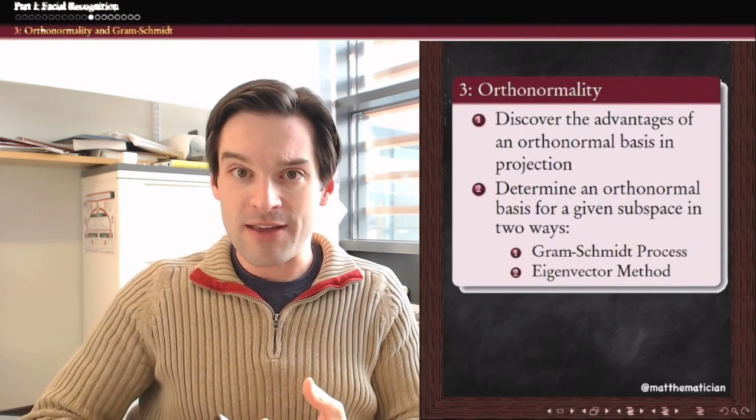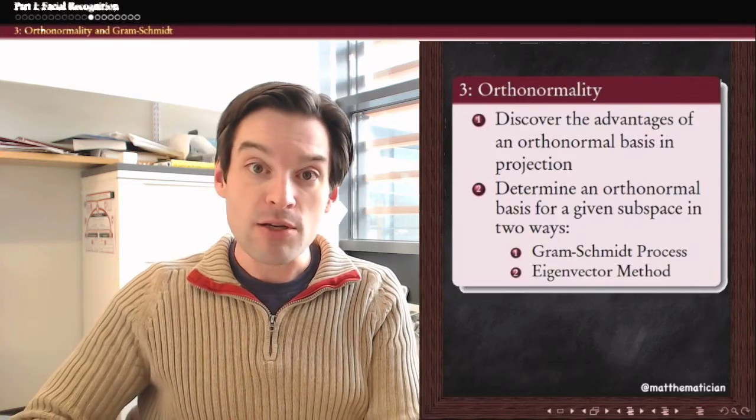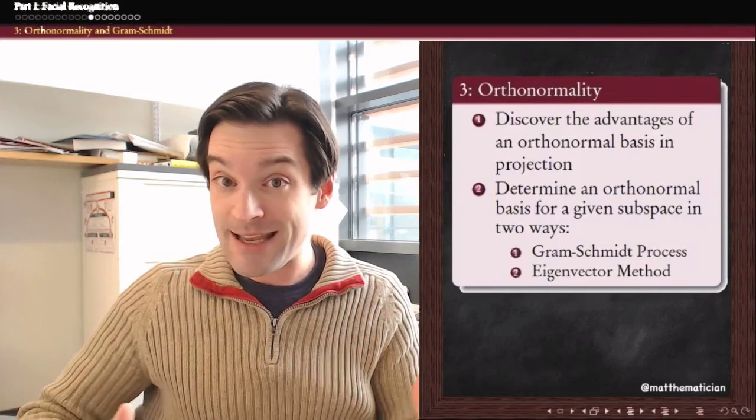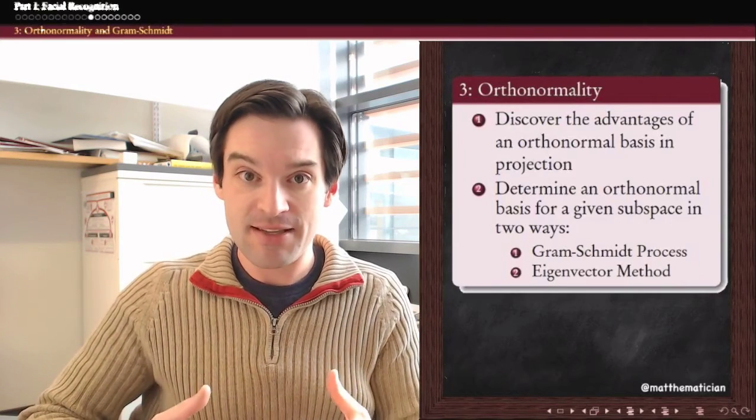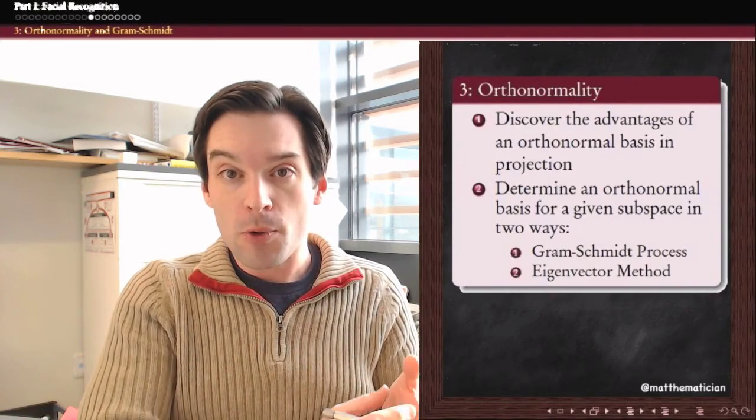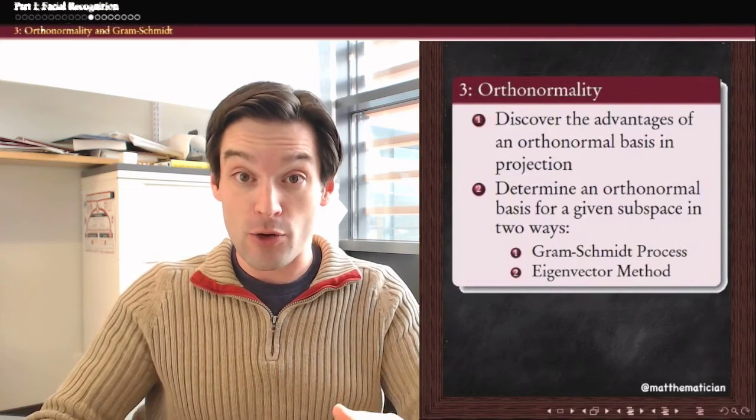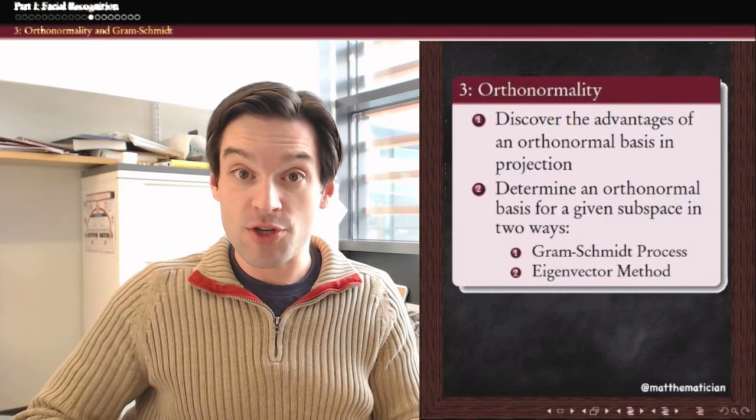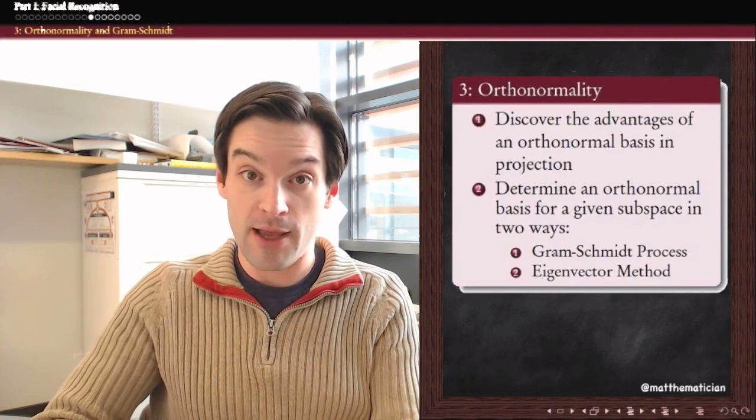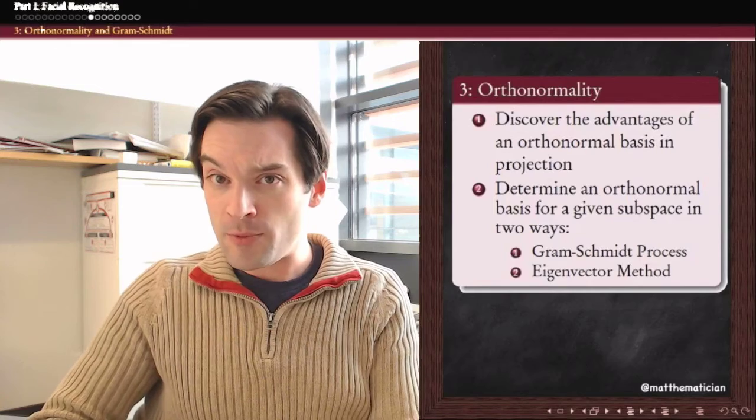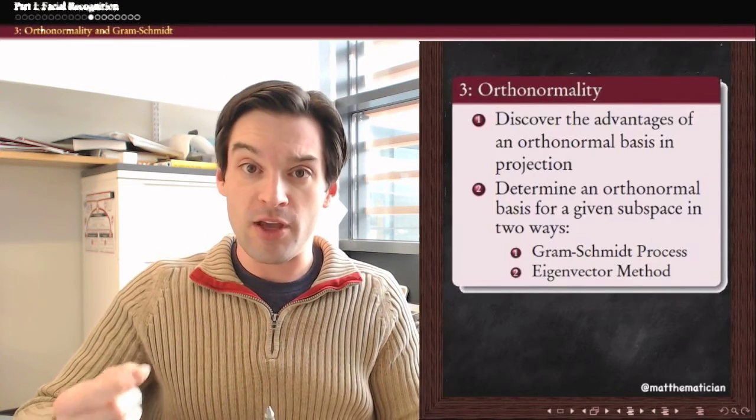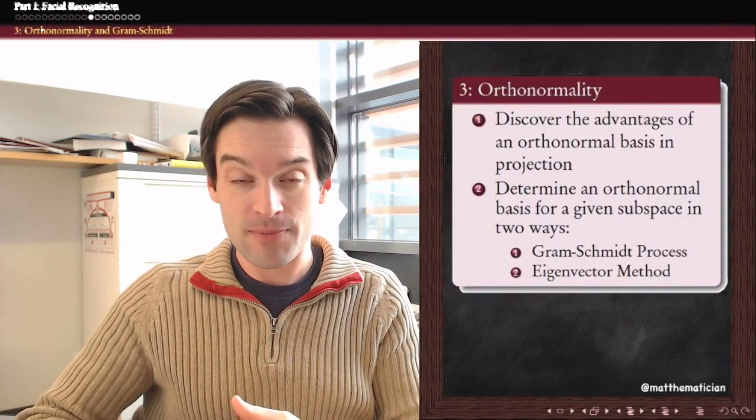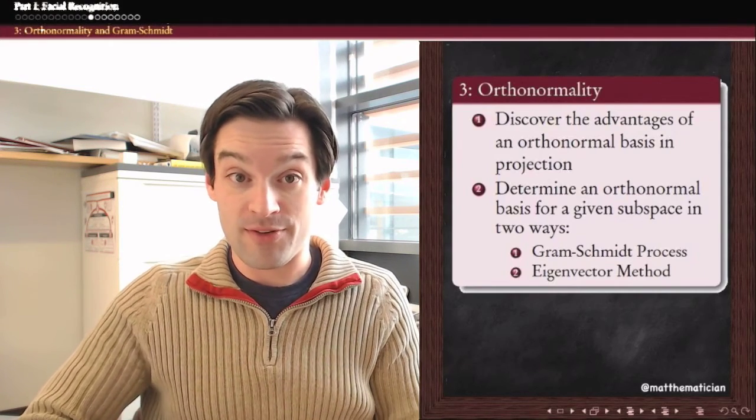And then after that, we turn to the existence question. Well, how do we know that an orthonormal basis for a given subspace actually exists? And if it does exist, how can we find one? We're going to look at two different methods for how to find an orthonormal basis for a given subspace. The first is the traditional Gram-Schmidt process, which you can find in most linear algebra textbooks. But the second one is actually going to be the one that's used in our facial recognition algorithm by which we're going to find the eigenvectors of a matrix to determine an orthonormal basis for a subspace.